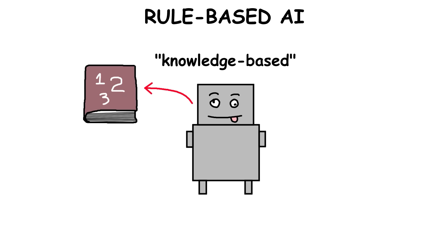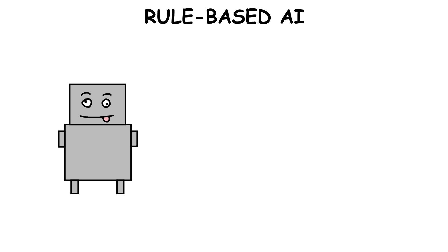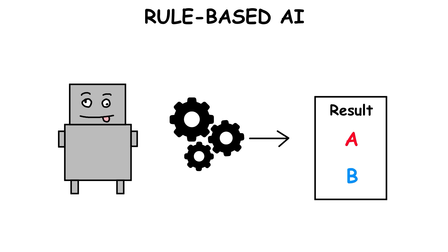This is why it's sometimes called a knowledge-based system. This type of AI works best for straightforward tasks with predictable results.